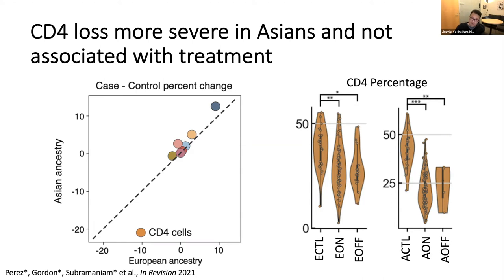When we saw this result, especially since our UCSF patients have been treated for a long time, we wondered whether this was a treatment effect. But that turns out not to be the case. Although most of our patients are treated, a handful of patients of both ancestries have not been on any immunosuppressive treatments including steroids for the past six months, and they still have a decrease in the frequency of CD4s — so this is likely not a treatment effect.